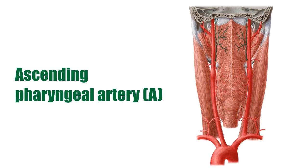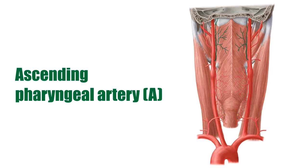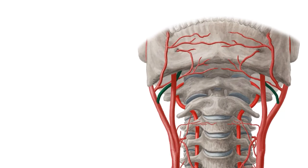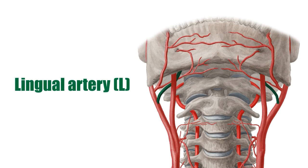The lingual artery is the third branch of the external carotid artery and it runs beneath the hyoglossus muscle as it branches into the deep lingual and sublingual arteries, which supply the intrinsic muscles of the tongue and the floor of the mouth.